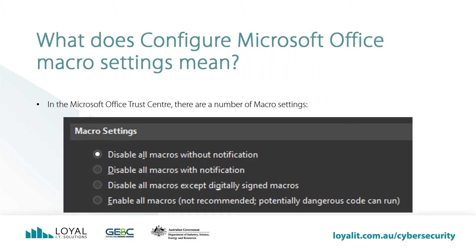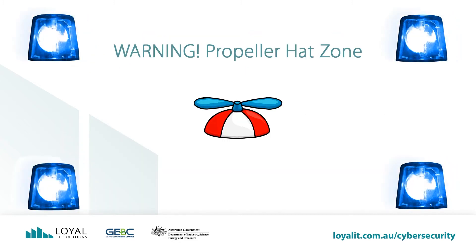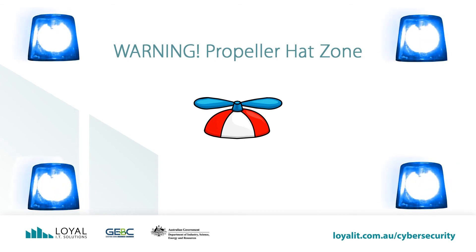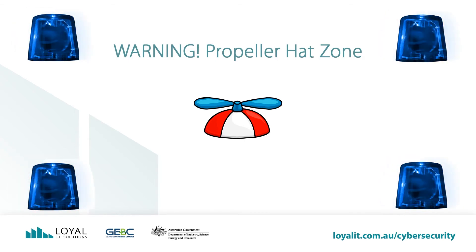As we've covered the different macro settings in the Configure Microsoft Office Macro Settings video, we'll see how they work in practice with a demonstration. We're going to have two propeller hat zones. A one propeller hat zone for disable all macros without notification, disable all macros with notification, and enable all macros. And we'll have a five propeller hat zone for disable all macros except digitally signed macros. This section is rated one propeller hat out of five.